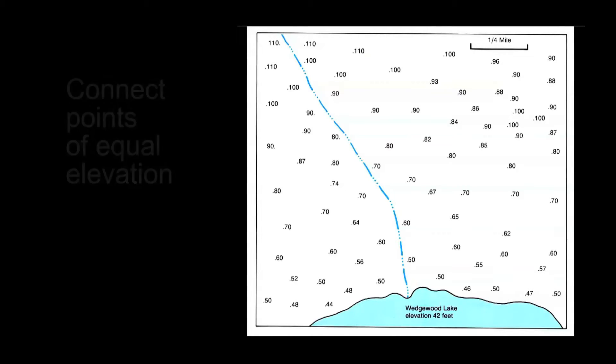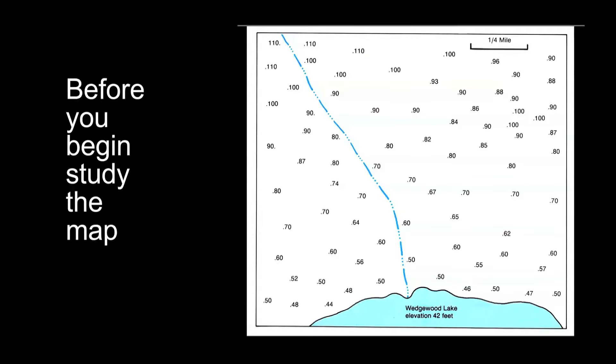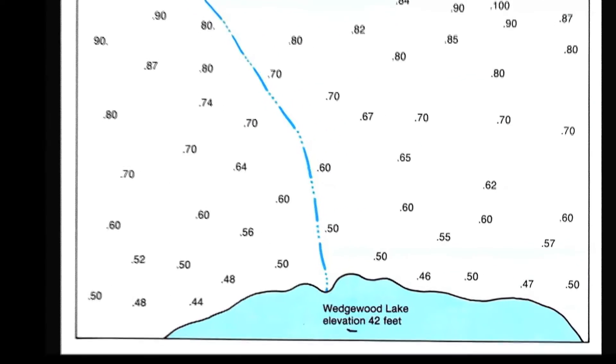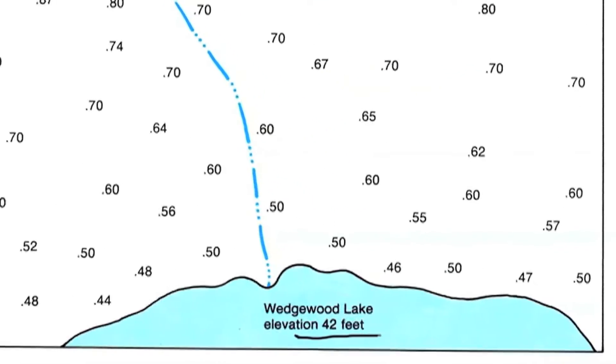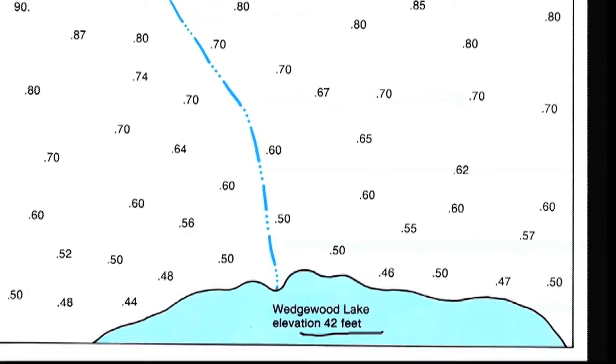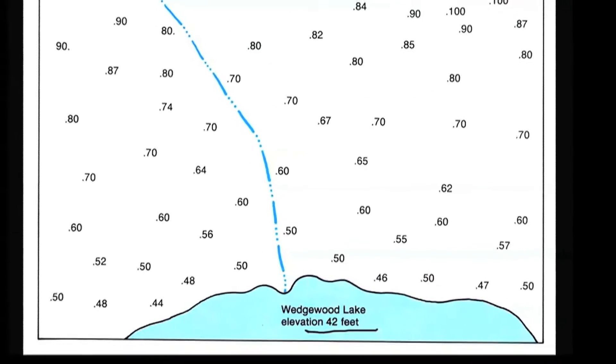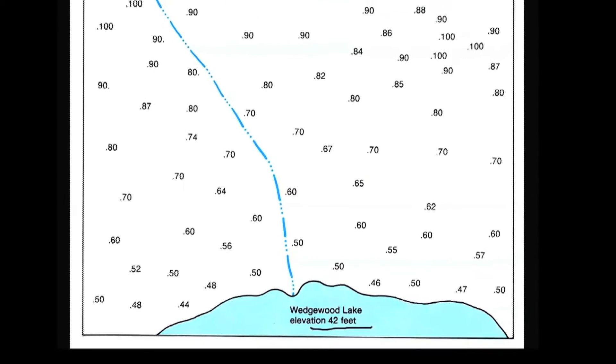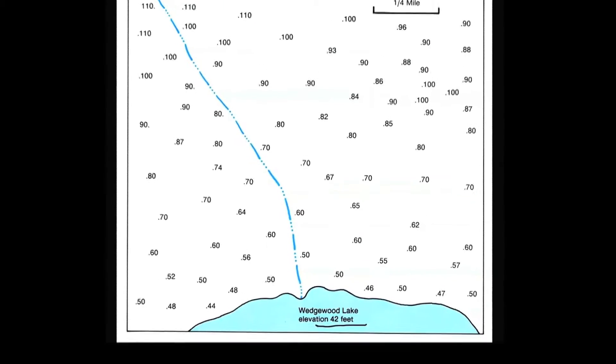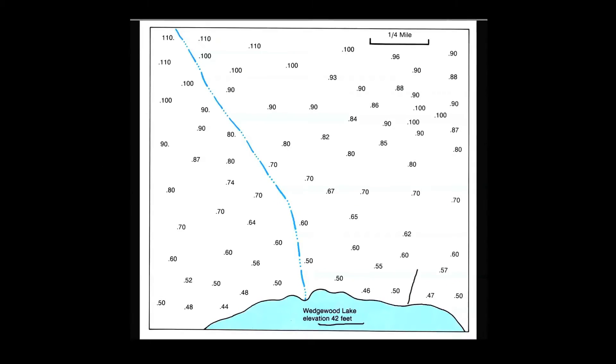Before I start a project like this, I usually take a look at the map to get the lay of the land, as it were, and I see a couple of things worth noting. I see that probably the lowest elevation on the map is Wedgwood Lake down in the south portion of the map at an elevation of 42 feet, and as you might expect, as you move away from the map in any direction, the elevations tend to increase, going uphill.